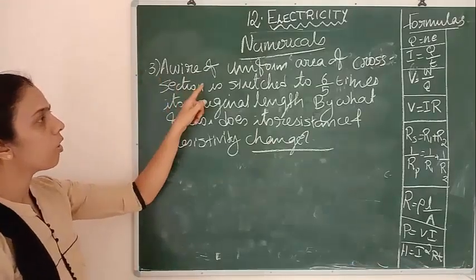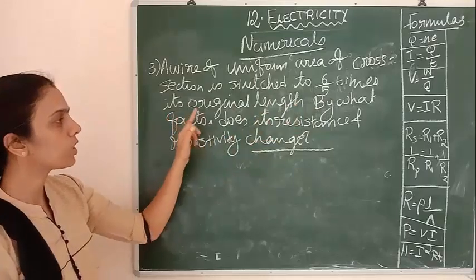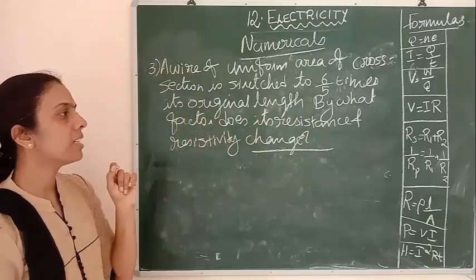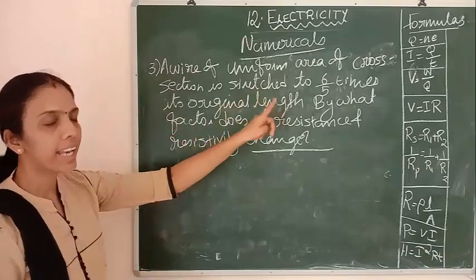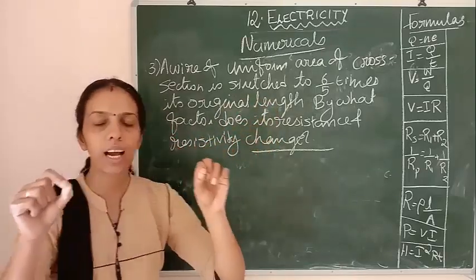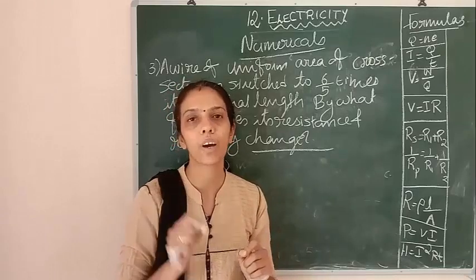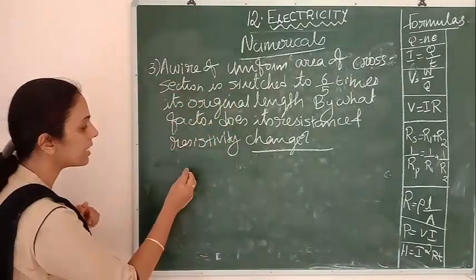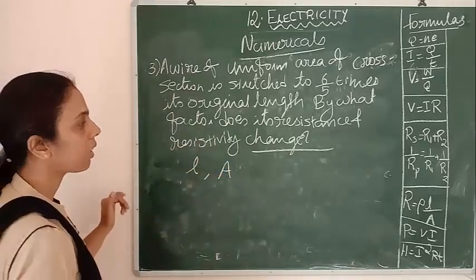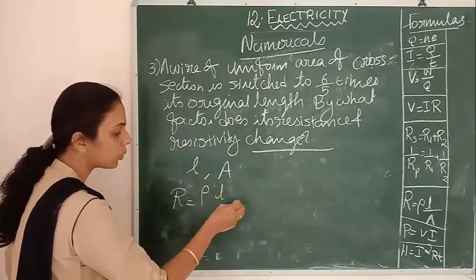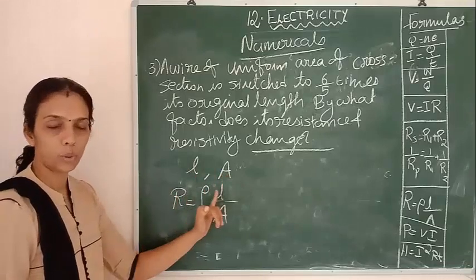Next question: a wire of uniform area of cross-section is stretched to 6/5 times its original length. By what factor does its resistance and resistivity change? Here, the length is being changed. If L is the original length and A is the area of cross-section, the resistance formula is R equals rho times L divided by A.